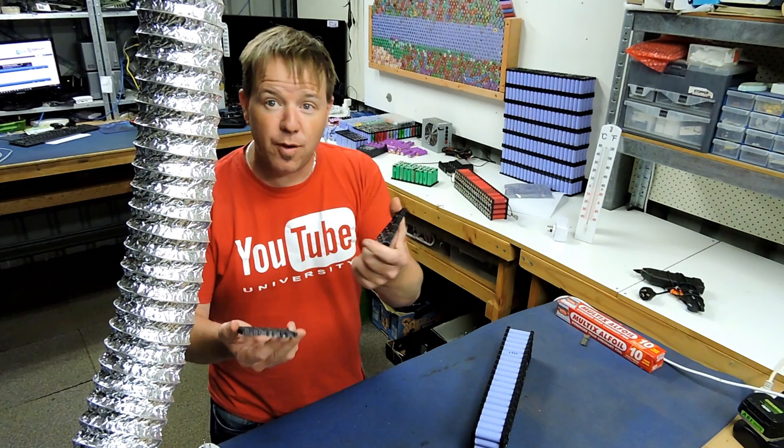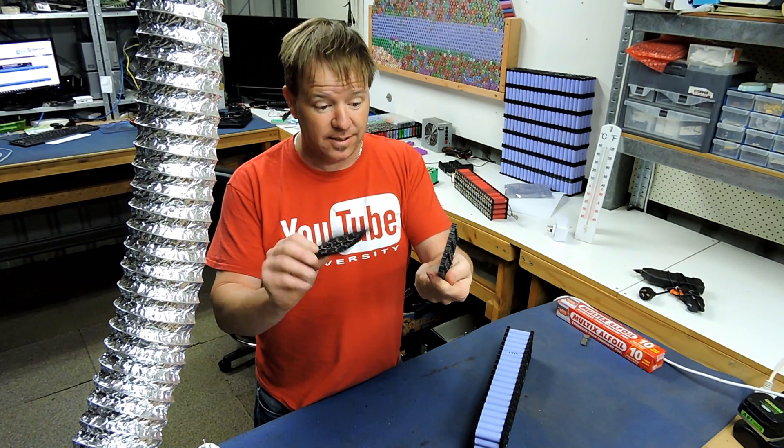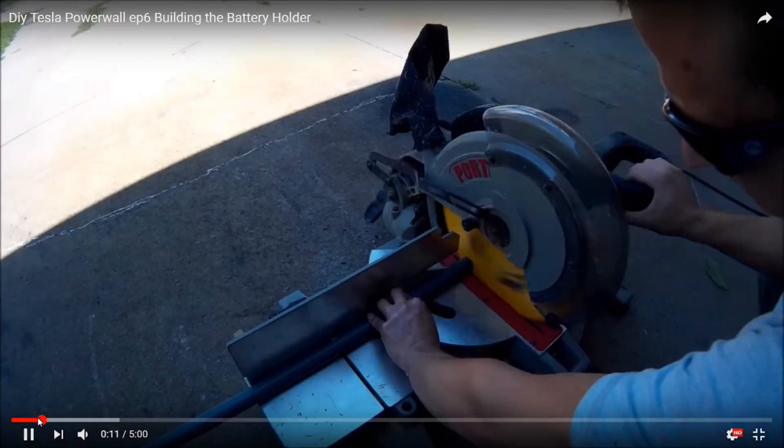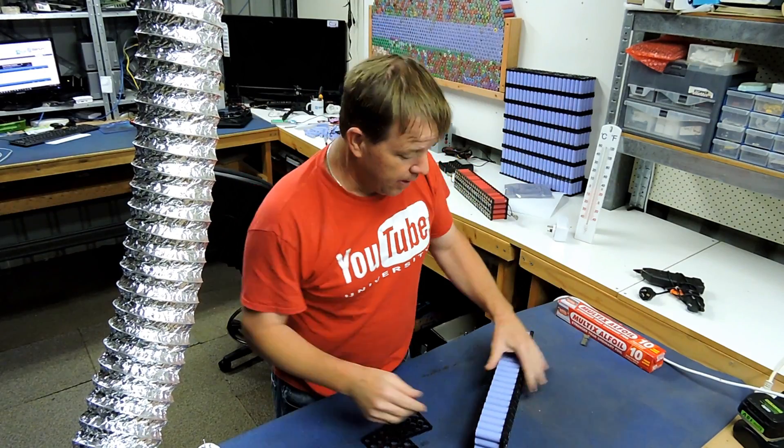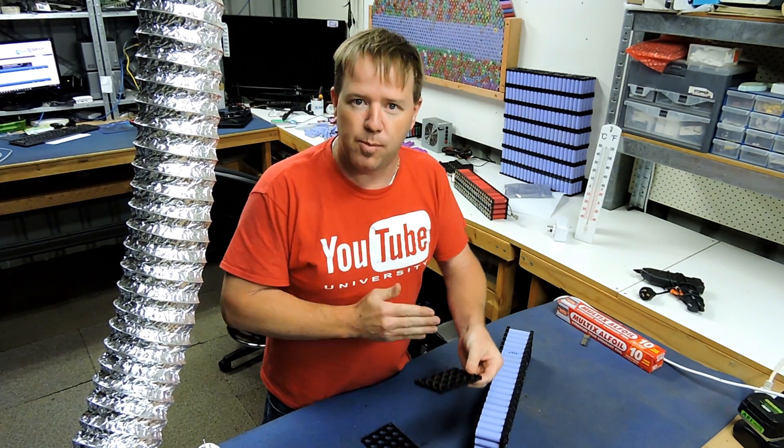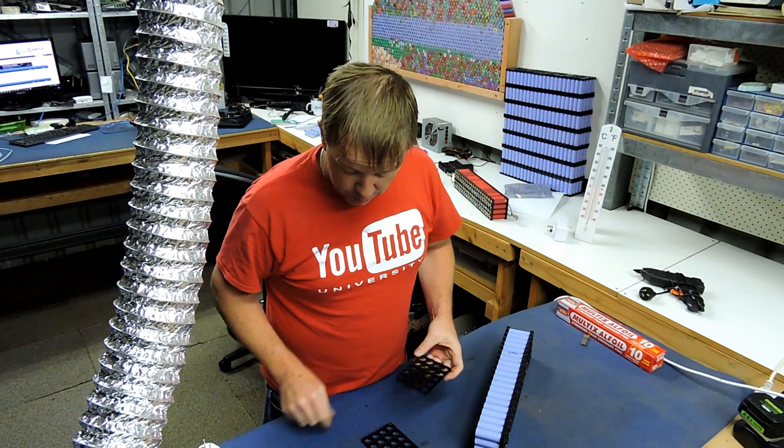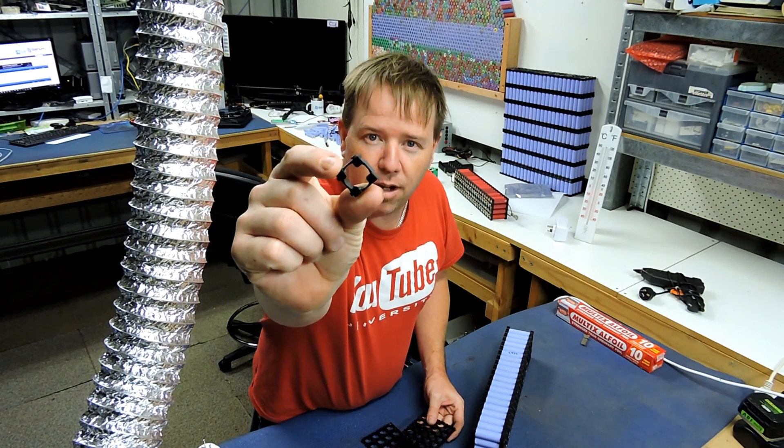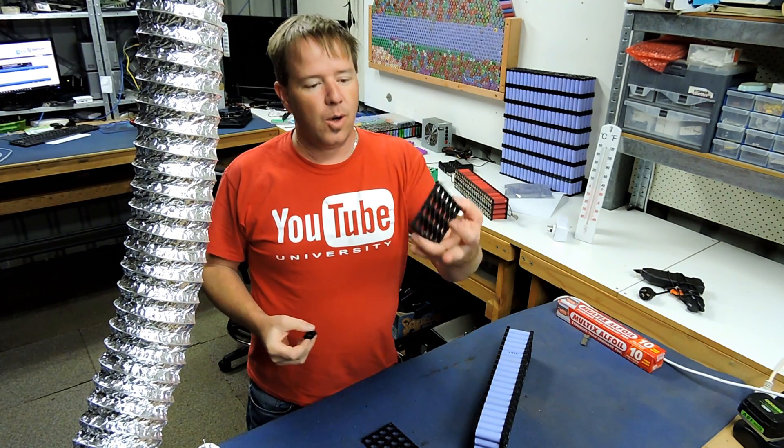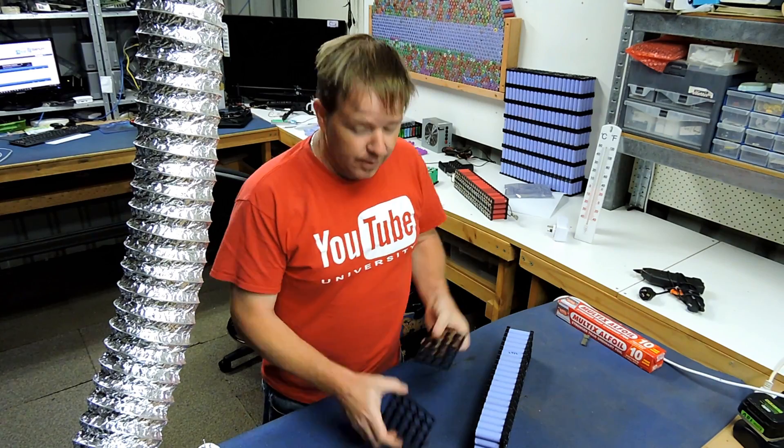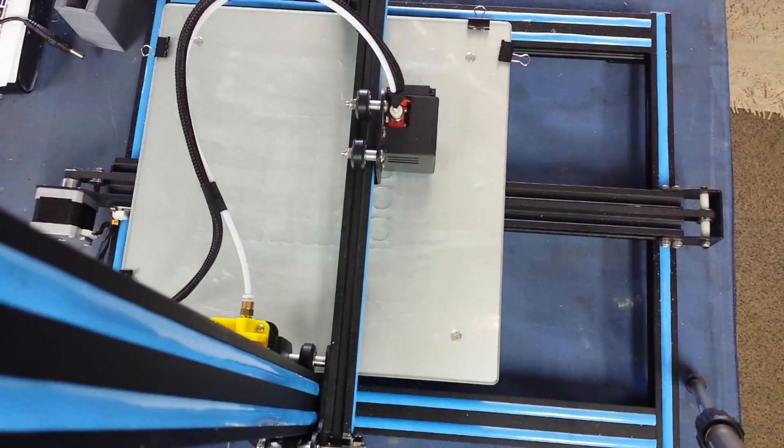There's a couple different ways you can actually go about these cell holders to build your packs. One, you could do Average Joe's way and use PVC pipe, cut them all up. Very cheap, a little bit slow. You could use the single cell holders off eBay or Amazon, or you could use the 4x5s, my preferred 4x5s.